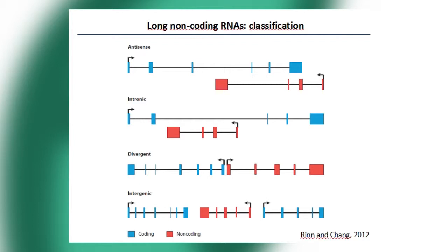What are Non-Coding RNAs? They are genes that are transcribed but don't encode any protein. They can be classified according to their position in the genome. In blue you can see protein-coding genes, and in red, Non-Coding RNA genes. They can be called antisense transcripts if they overlap protein-coding genes, or intronic Non-Coding RNAs if they are within an intron. We can also find divergent Non-Coding RNAs going through the promoter region, or intergenic Non-Coding RNAs located between protein-coding genes.